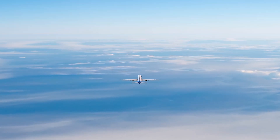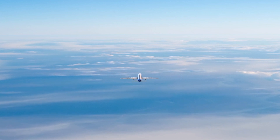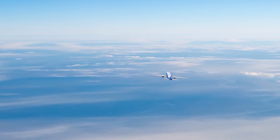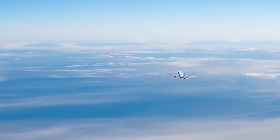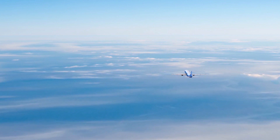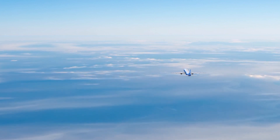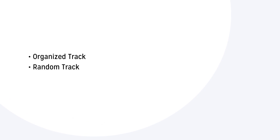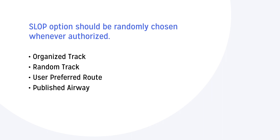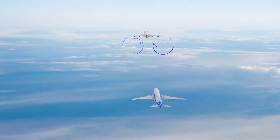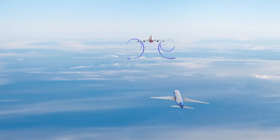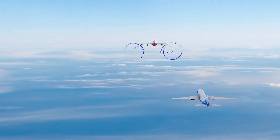2. SLOP options, including centerline and up to 2 nautical miles right of centerline, should be randomly chosen during flight within remote and oceanic airspace no matter the routing — for example, whether organized track, random track, user preferred route, or published airway. The SLOP option should be randomly chosen whenever it is authorized. The choice in the SLOP option can be dynamic throughout operations depending on surrounding traffic and wake turbulence considerations.